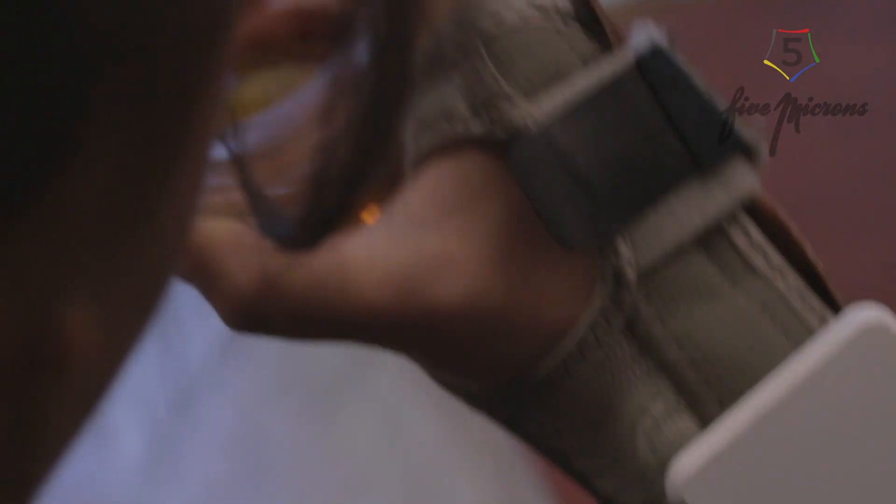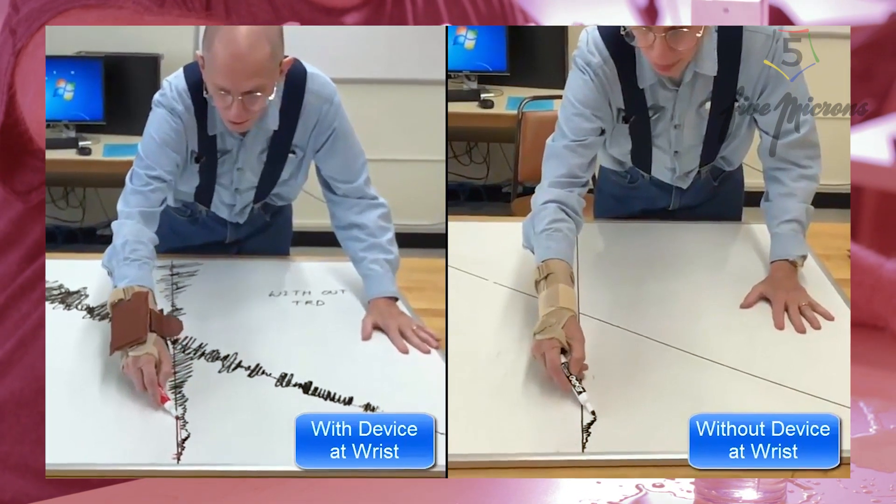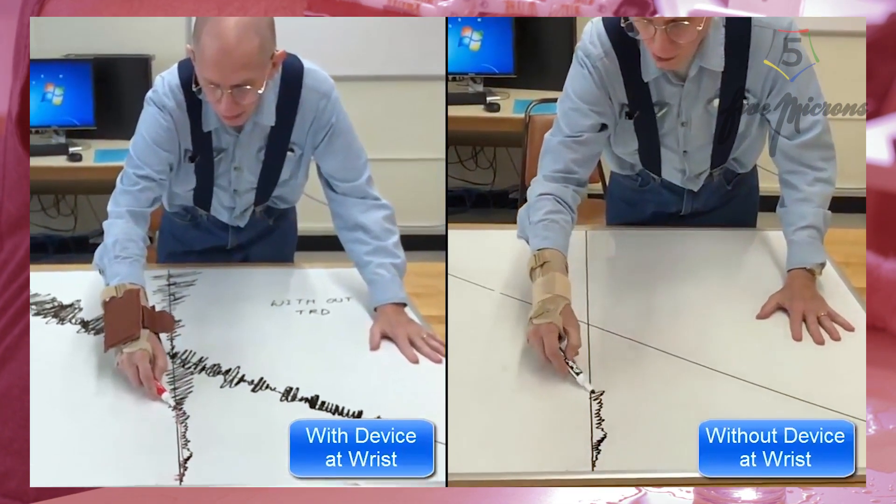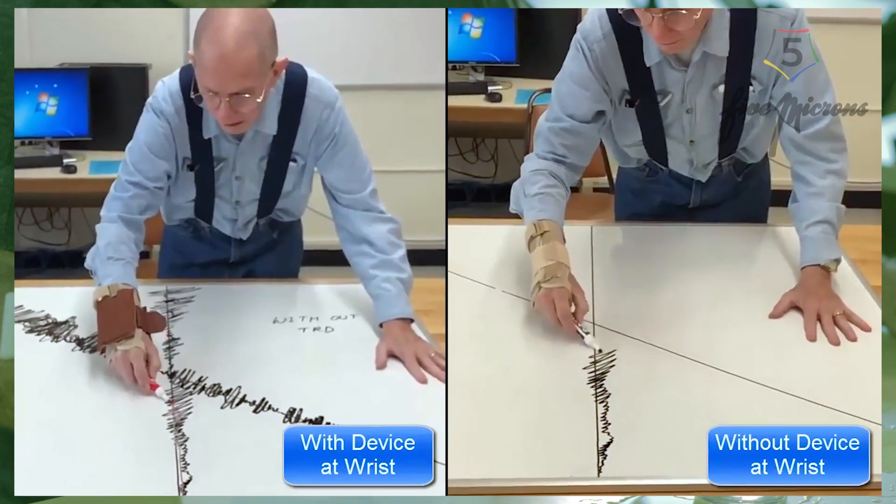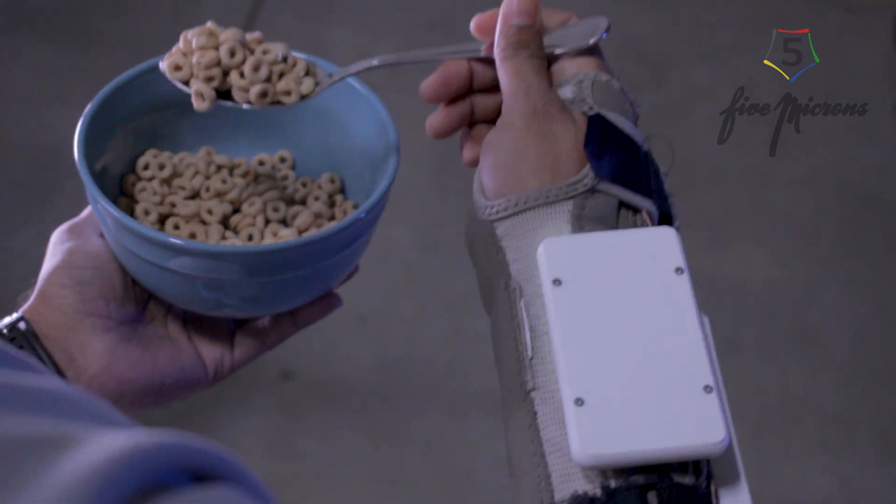Fresno State professor has developed an invention that could be life-changing to patients dealing with hand tremors. He explains how the anti-tremor device works. 5 Microns launched with humble beginnings, sparked by a simple mission to help others.